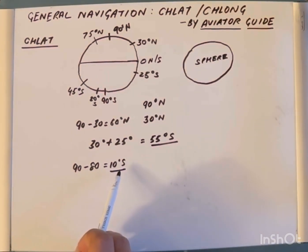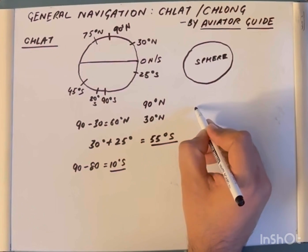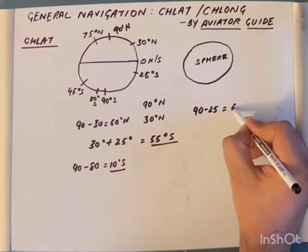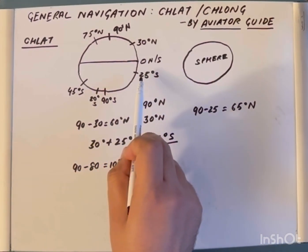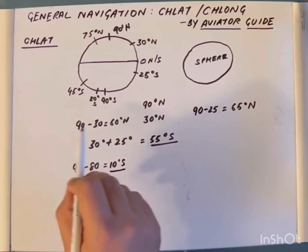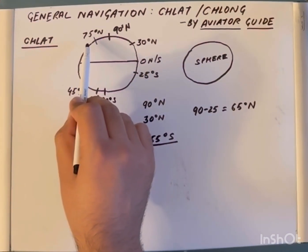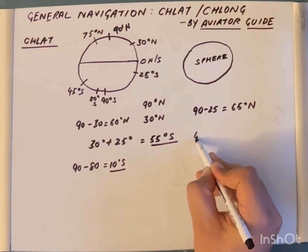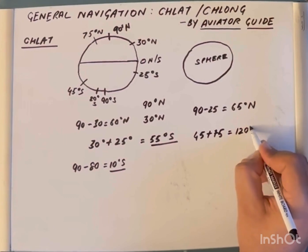To find the ch-lat between 90 South to 25 South, we write 90 minus 25, giving us 65 degrees North — meaning we have traveled north. Now, to find the ch-lat between 45 South and 75 North, traveling from 45 South to 75 North, that will be 45 plus 75, which equals 120 degrees North.